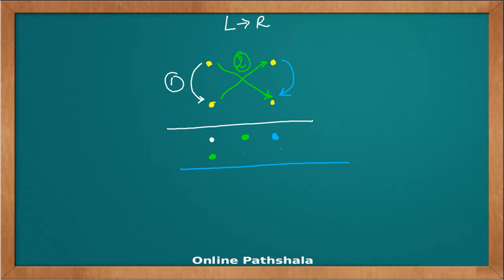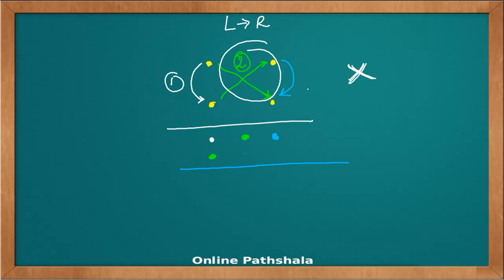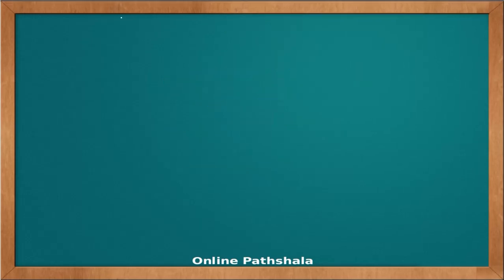One thing you should have observed is the cross that appears in the middle step. This cross is actually what led to the multiplication sign — the multiplication sign originated from this crosswise pattern. That is why this method is known as vertically and crosswise.